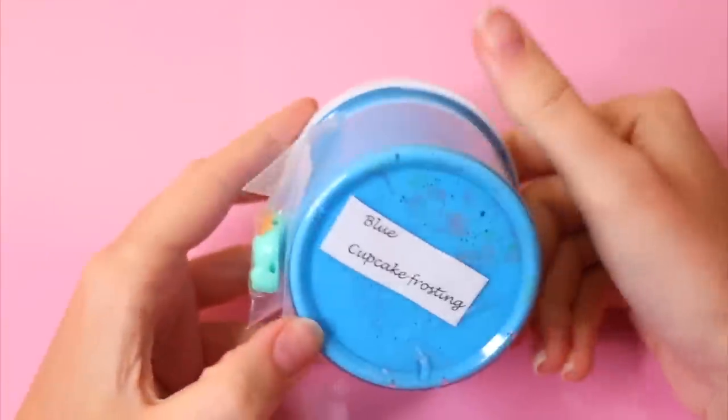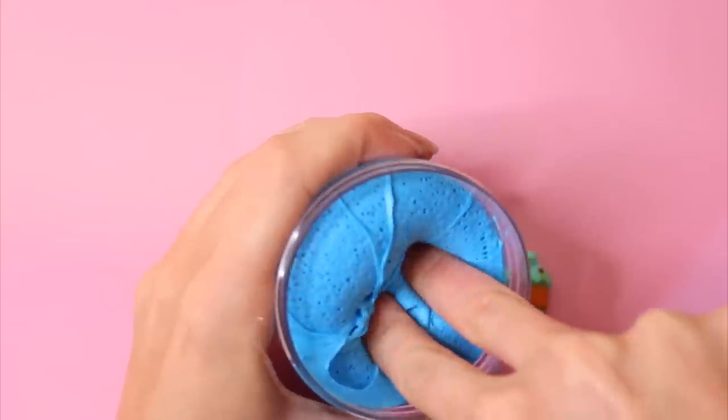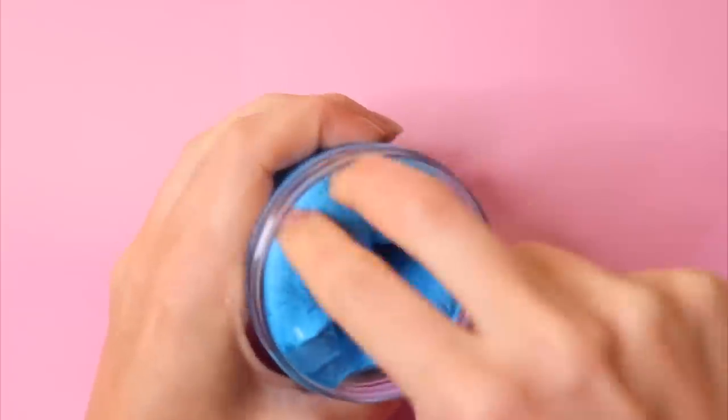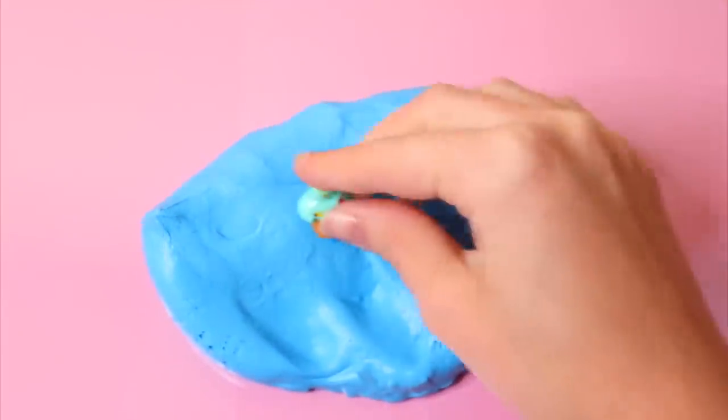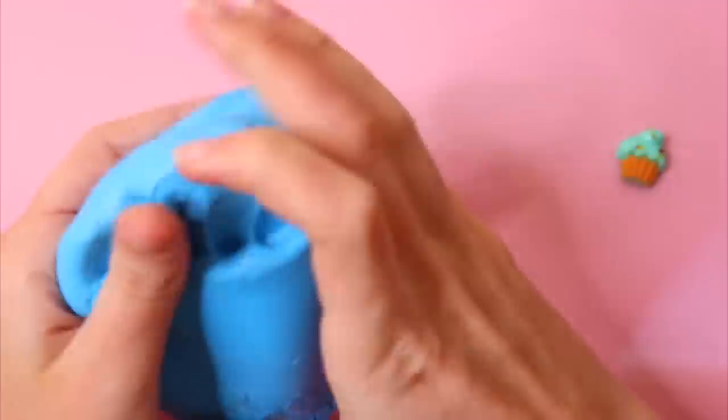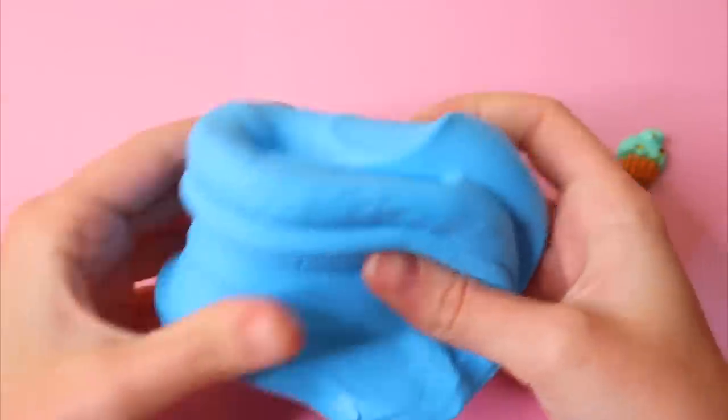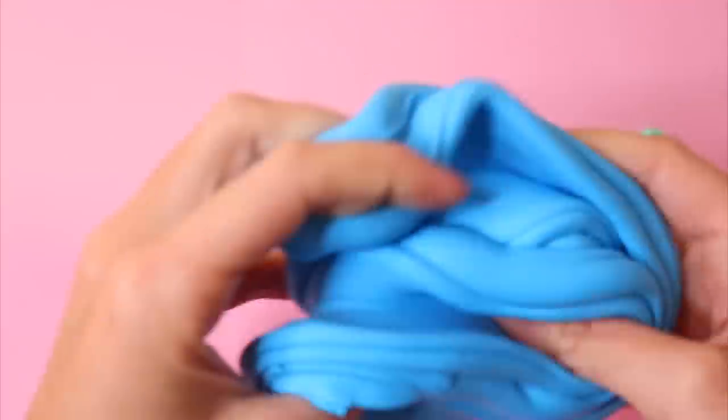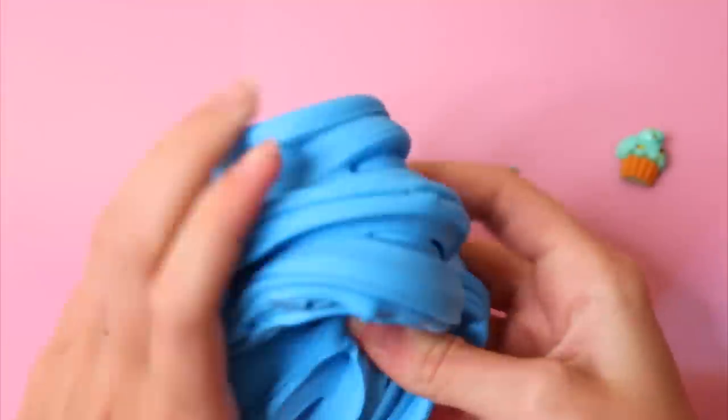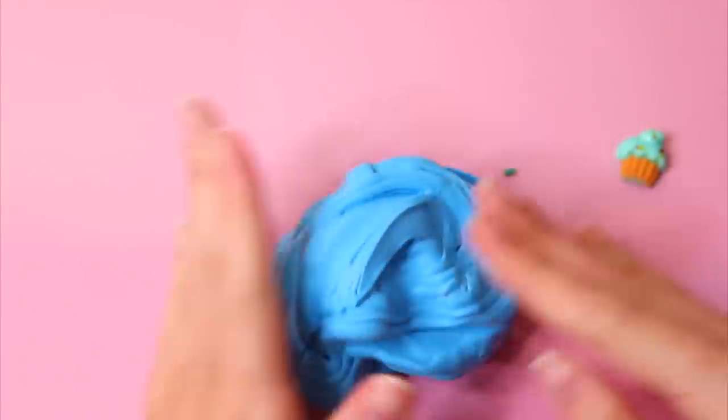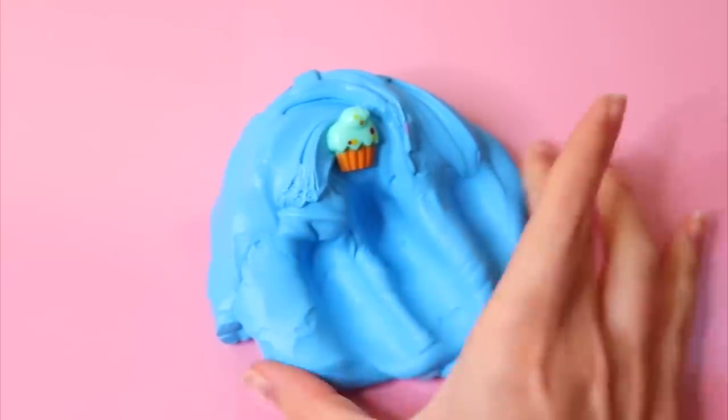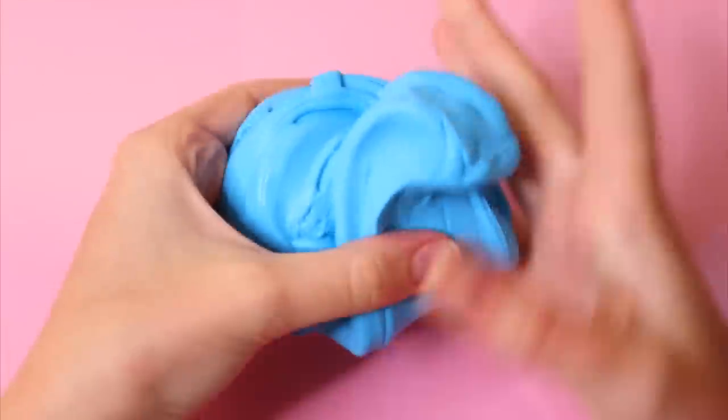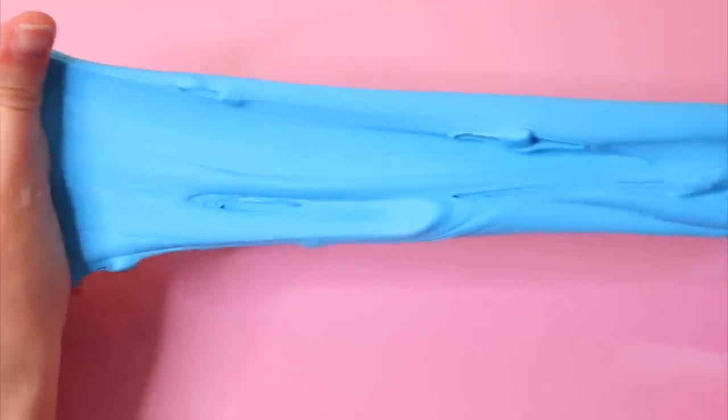This next slime is called Blue Cupcake Frosting and it came with this cutest cupcake charm. I absolutely loved it. It matched it so well. And this one also was a very tough texture. I'm not sure what it is. Maybe there's too much clay in it. It wasn't quite as stiff as the other one, but it definitely did still have a very stiff consistency. It was definitely more like a putty type of slime, but this one still had some stretch to it. So I definitely liked this one better than the last one, but the color was gorgeous. Look how pretty this blue color is and it had some fake sprinkles in it and the cupcake and it smelled delicious, just like a cupcake and bakery. So I really liked the concept of this one. It was really nice.